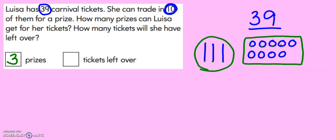1, 2, 3, 4, 5, 6, 7, 8, 9. She almost has enough for another prize because here are her 30 tickets and 9 tickets left over. If only she had one more ticket, she would be up to 40 and then she could get 4 prizes.